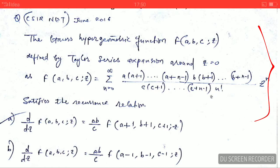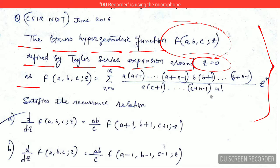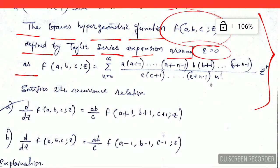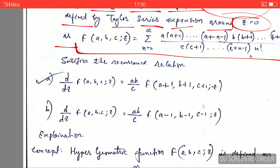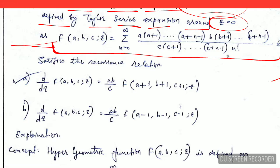So let's read the question. The Gauss hypergeometric function, this is the function defined by the Taylor series expansion around z equals 0. This is the function given here, and they have asked you that this function satisfies which of these equations. Either this is correct or this is correct.